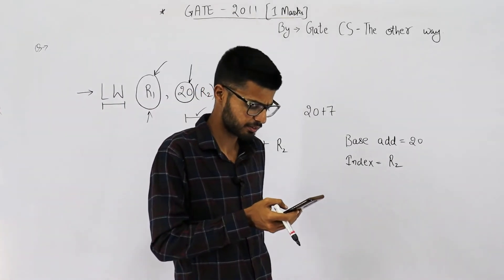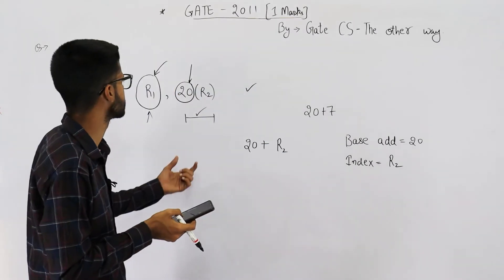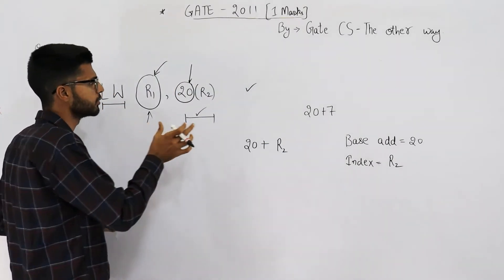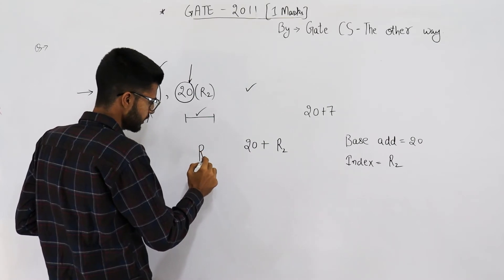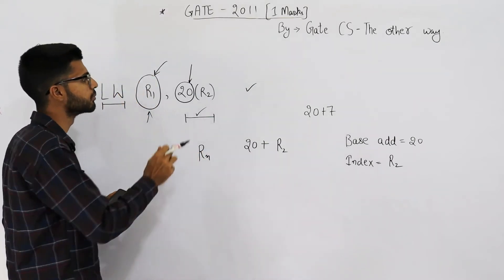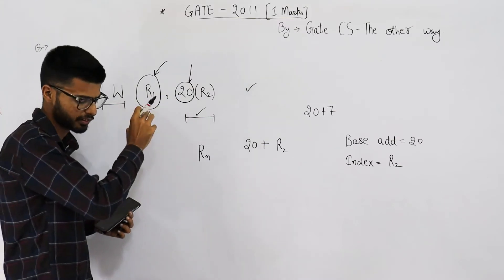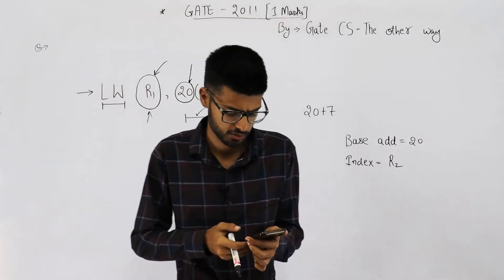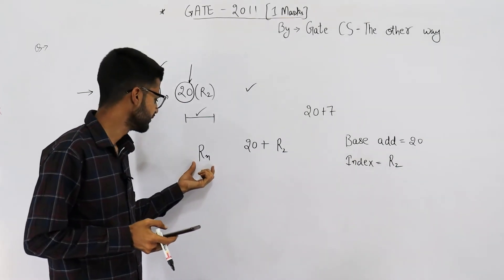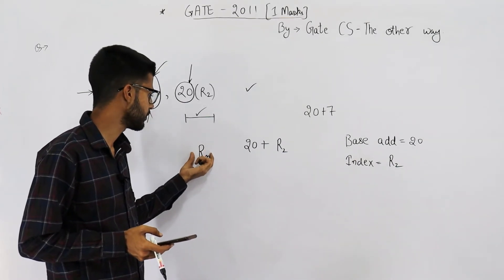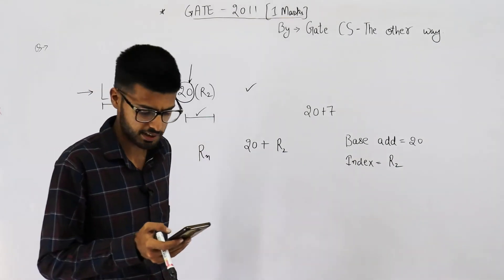Second is register addressing. No, that's not register addressing. Because had it been register addressing, we would have specified only name of a register. But here we have also specified a constant. So it's not register addressing. By the way, register addressing means we just specify the name of a register which contains our data or operand.